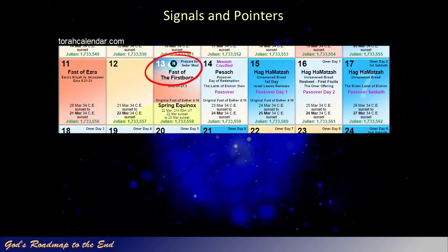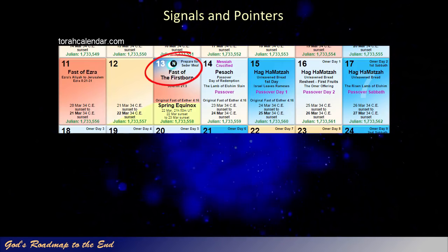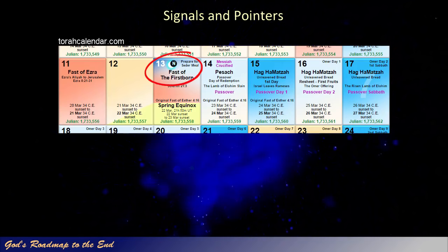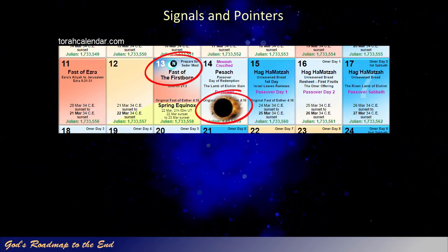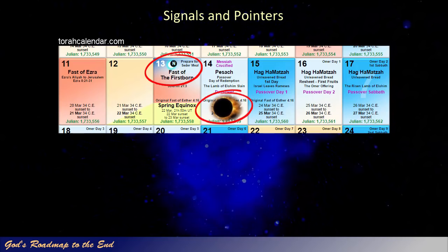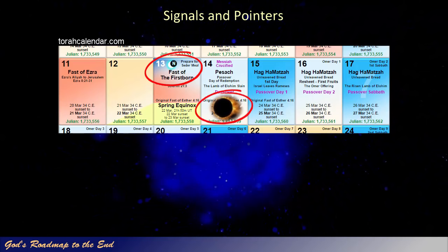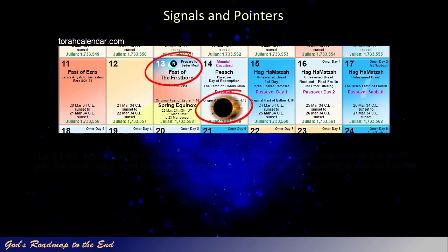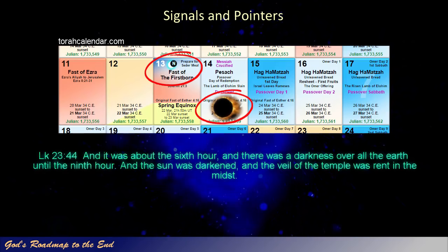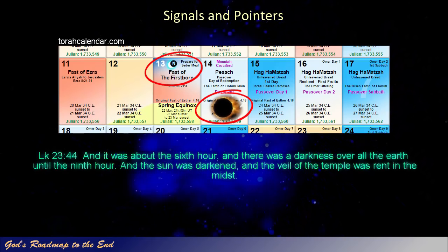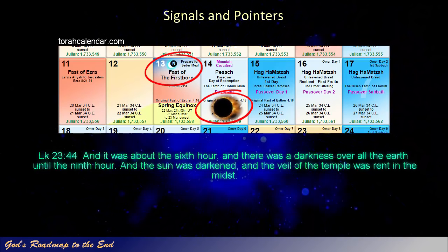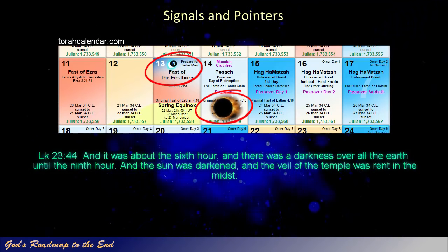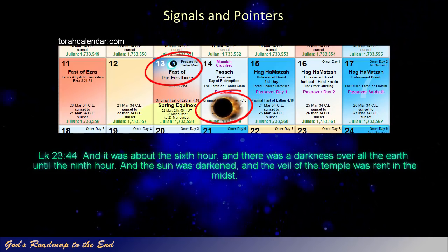This unusual event is recorded in the Gospels, and this is Luke's account of the event. Luke 23 verse 44: 'And it was about the sixth hour, and there was a darkness over all the earth until the ninth hour. And the sun was darkened, and the veil of the temple was rent in the midst.'